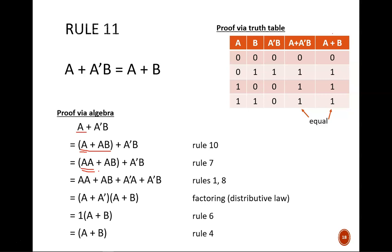Then, rules 1 and 8 together let us add this A prime A. A prime A equals 0, and anything ORed with 0 is itself. Now we're done expanding and can simplify. Through the distributive law, we can rewrite these four terms into these two terms in parentheses.